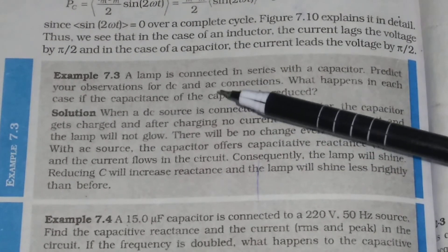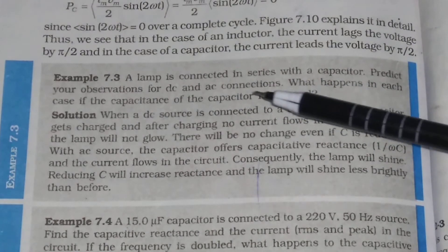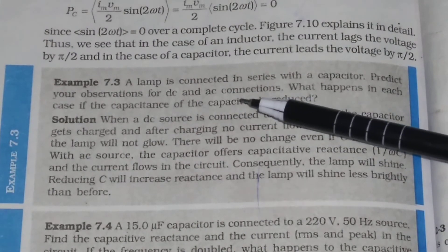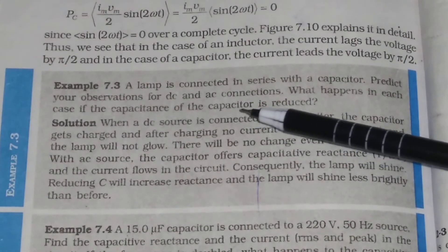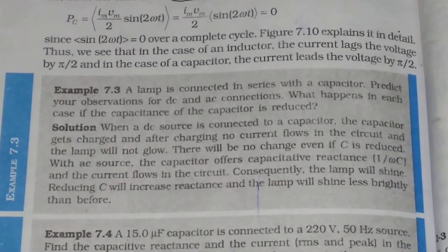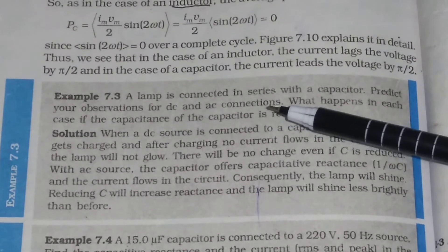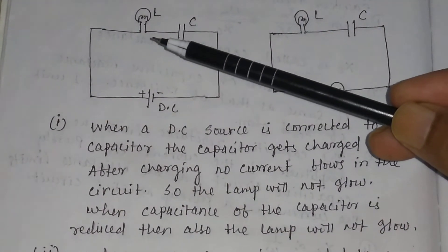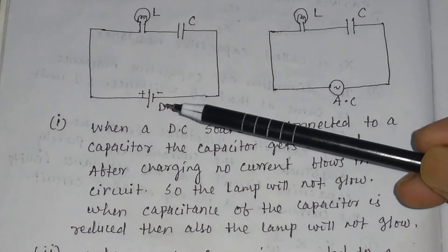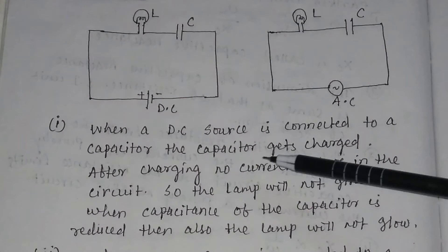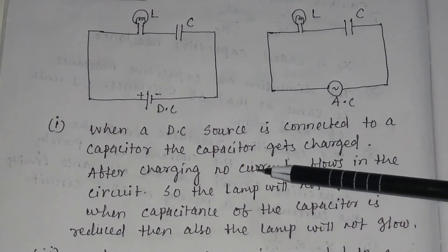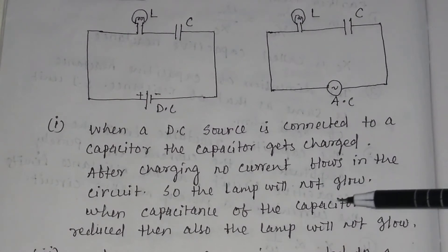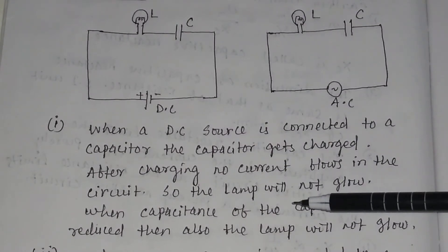Let us work out a problem. A lamp is connected in series with a capacitor. Predict your observations for DC and AC connections, and what happens in each case if the capacitance of the capacitor is reduced. When the capacitor is connected to a DC source, the capacitor gets charged. After charging, no current flows in the circuit, so the lamp will not glow. When the capacitance of the capacitor is reduced, the lamp will still not glow.